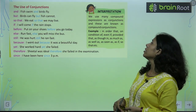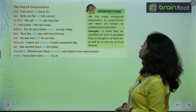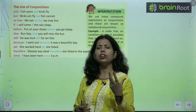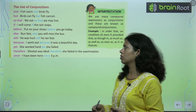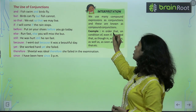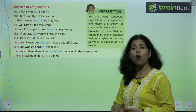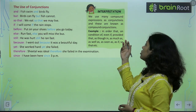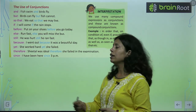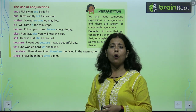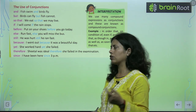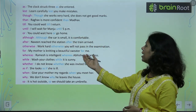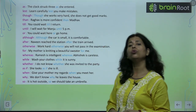We use many compound expressions as conjunctions, and these are known as compound conjunctions — bahut sare expressions hote hai jo hum compoundedly use karte hai. For example: in order that, on condition of, even if, provided that, as though, in as much as, at least. Yahan pe humara use bata rakha hai, kahaan kahaan hum in conjunctions ko use karte hai.